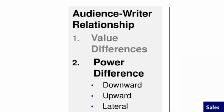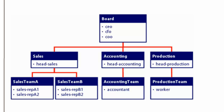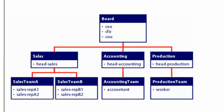The second way of categorizing the writer-reader relationship focuses on the difference in power between the writer's role and the audience's role. When the writer has official power over the audience — for example, when the head of sales communicates with a sales representative — it's called a downward message. The reverse, when the audience has power over the writer, is called an upward message. When neither has official power over the other, such as when the head of sales communicates with the head of accounting, it's called a lateral message. Analyzing power differences helps predict how much cooperation the writer can expect from readers.